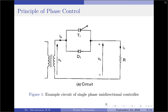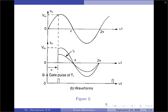Hence the circuit used for analysis is called a single-phase half-wave controller and is suitable only for low-power resistive loads such as heating and lighting. Figure 2 illustrates the gate pulses of thyristor T1 and the waveforms for the input and output voltages. It can be seen from the output voltage waveform that the output appears only for a part of the input positive half cycle.